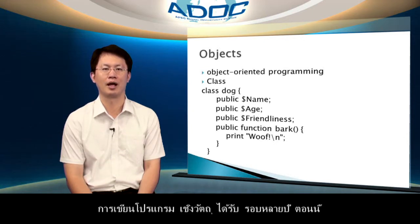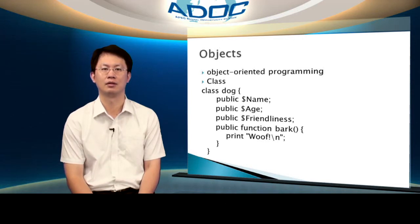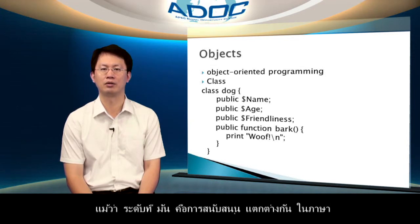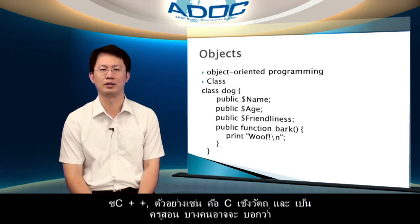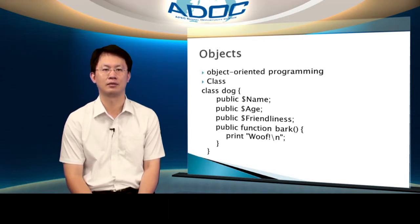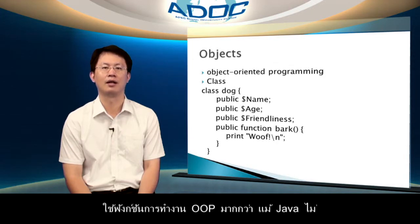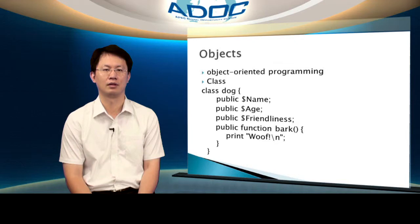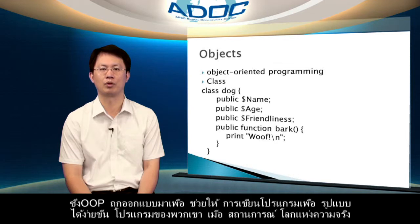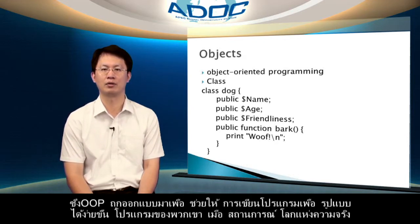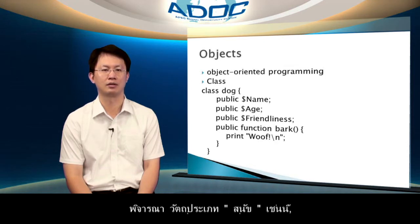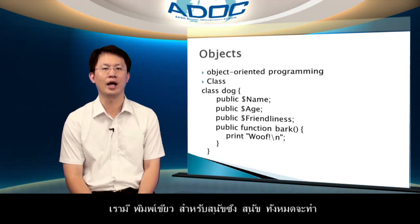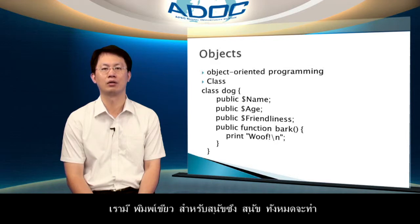And object-oriented programming has been around for many years now, although the degree to which it is supported varies widely across languages. C++, for example, is object-oriented C, and as some purists would say, implements more OOP functionality than even Java does. OOP was designed to allow programmers to more easily model their programs upon real-world scenarios. Consider an object of type dog. We have a blueprint for dogs, from which all dogs are made.